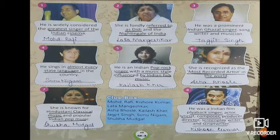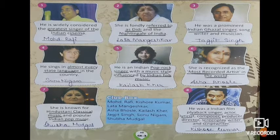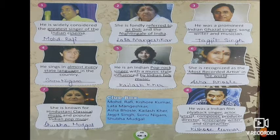Let's start with the first one. The picture is also given and the description is also given. Underline the things which I have marked in the book. He is widely considered the greatest singer of Indian cinema — Mohamed Rafi. You will write the spelling this way: Mohamed in short form, M-O-H-D dot, Rafi.